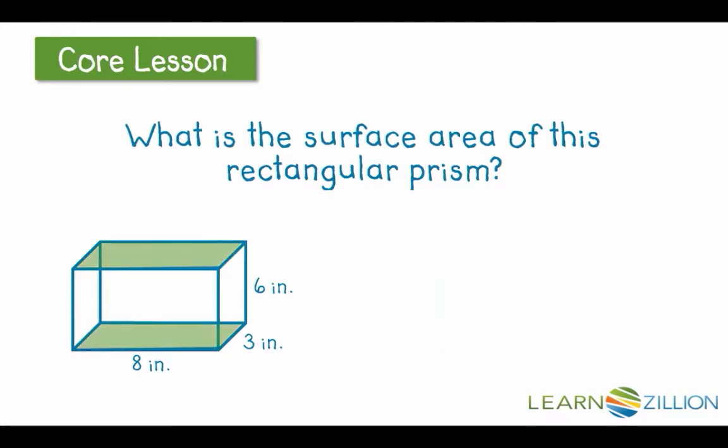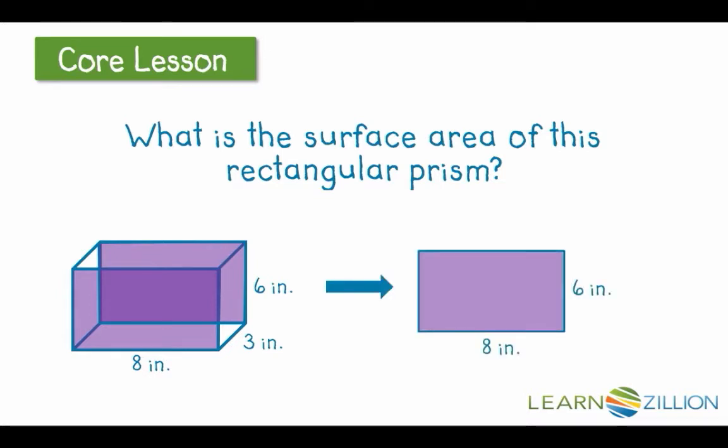We also have two parallel, congruent green faces. These ones are a little larger, they are 8 inches by 3 inches. And finally, we have a set of purple faces. These are the biggest ones on this particular prism, and they are 8 inches by 6 inches.